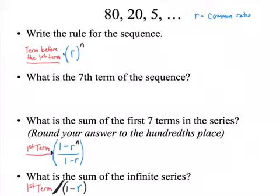The formula to find that is really what you're going to do to find R, your common ratio, is you take the second term and divide by the first term, or you could take the third term and divide by the second term. So I'm going to take the second term 20 and divide by the first term, and I get 1 fourth.